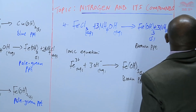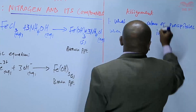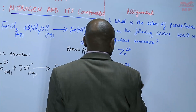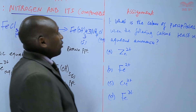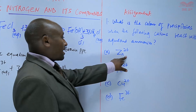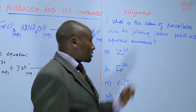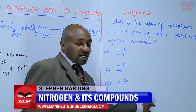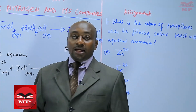Our assignment: What is the color of the precipitate when the following cations react with aqueous ammonia? Zinc ions — what color precipitate do they form? Iron(II) ions — what is the color of the precipitate? Copper(II) ions — what is the color of the precipitate? And iron(III) ions — what is the color of the precipitate? We are going to stop there. Until next time, goodbye.